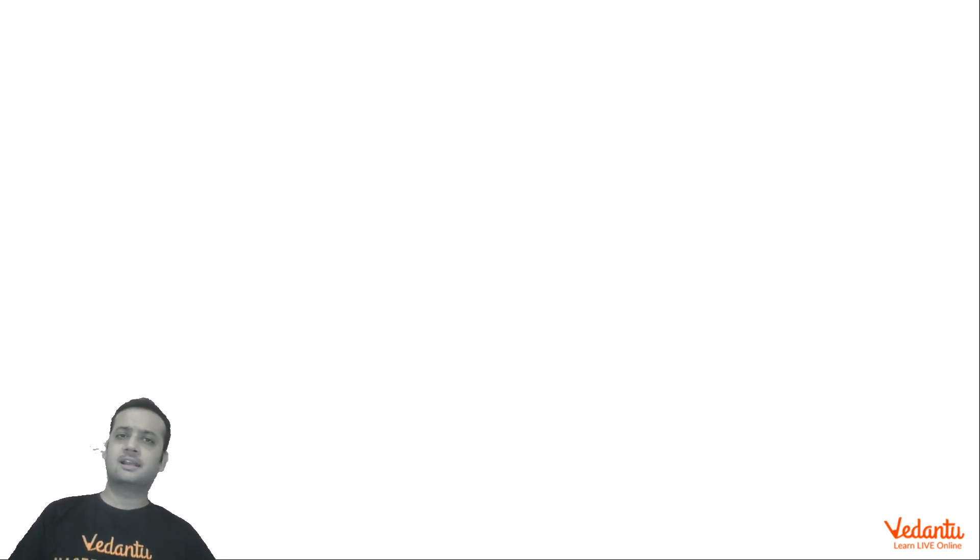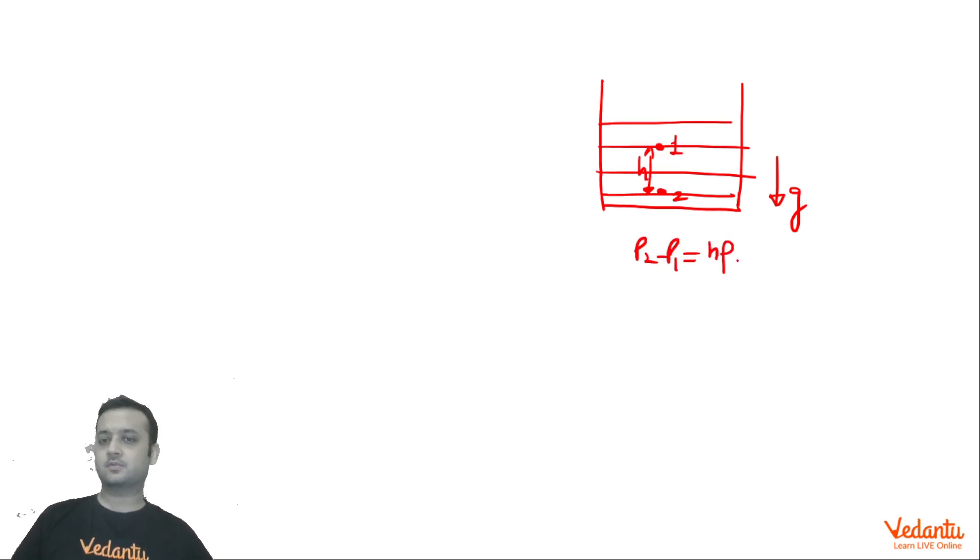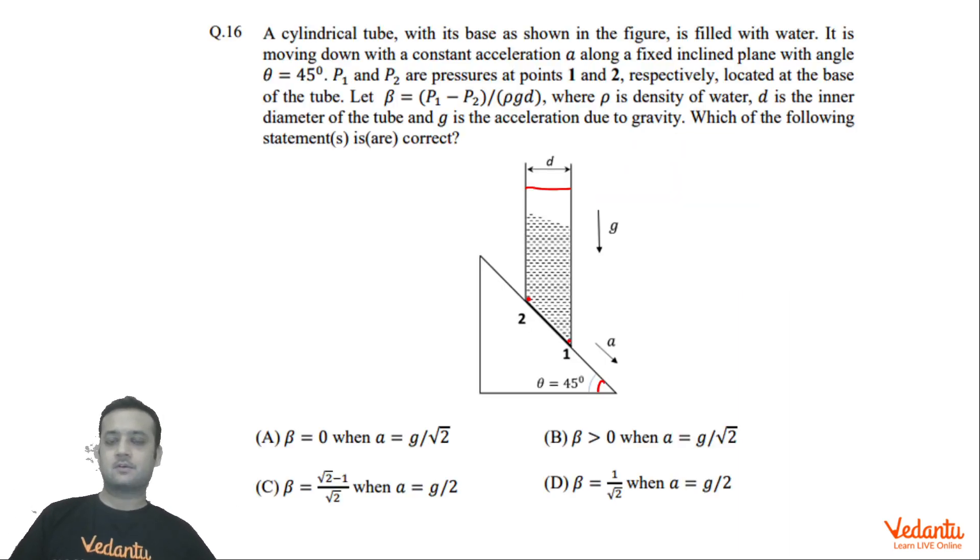Now before solving this question let's see one very simple concept. I will ask you a very simple question. In our world or that means we can say that in the Earth's frame if acceleration due to gravity is G then what is the pressure difference between these two points. Let's say this point is 1 and this point is 2 and they are separated by a height of H. So we know that this result is P2 minus P1 equals to H rho G. All of you know this. It's a very simple basic result. So the pressure difference is H rho G where H is the distance through which we travel in the direction of gravity. That means if we move in the direction of gravity pressure will increase. If we move opposite to gravity pressure will decrease. That's all we need to solve this question.